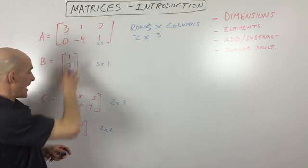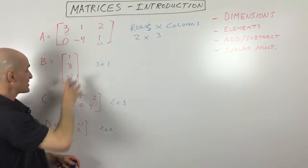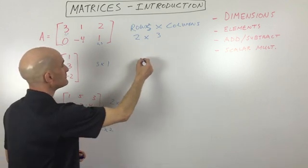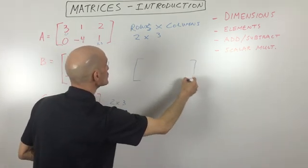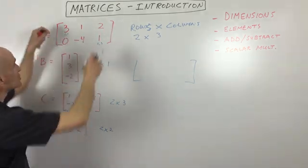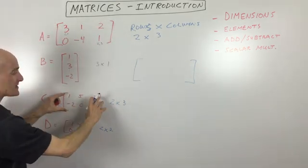So out of these four examples, it looks like matrix A and matrix C have the same dimensions. So let's go ahead and add those two matrices together. It's going to be two rows, three columns. What we're going to do is visualize picking up this matrix and placing it on this matrix.